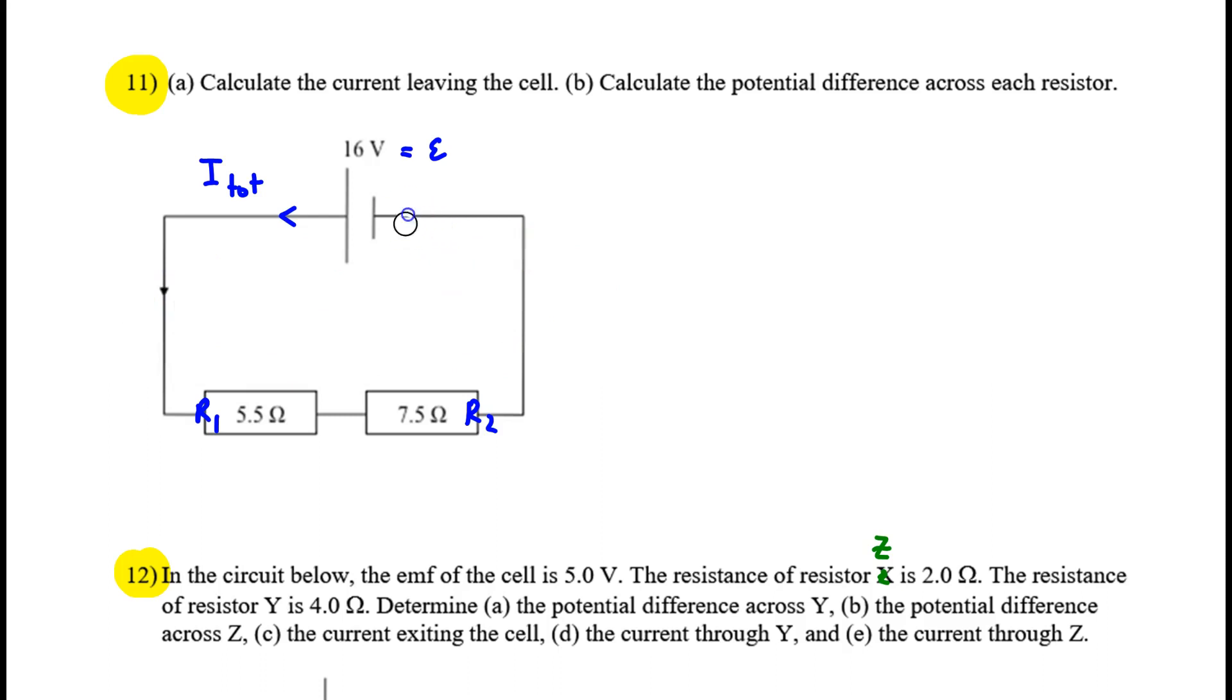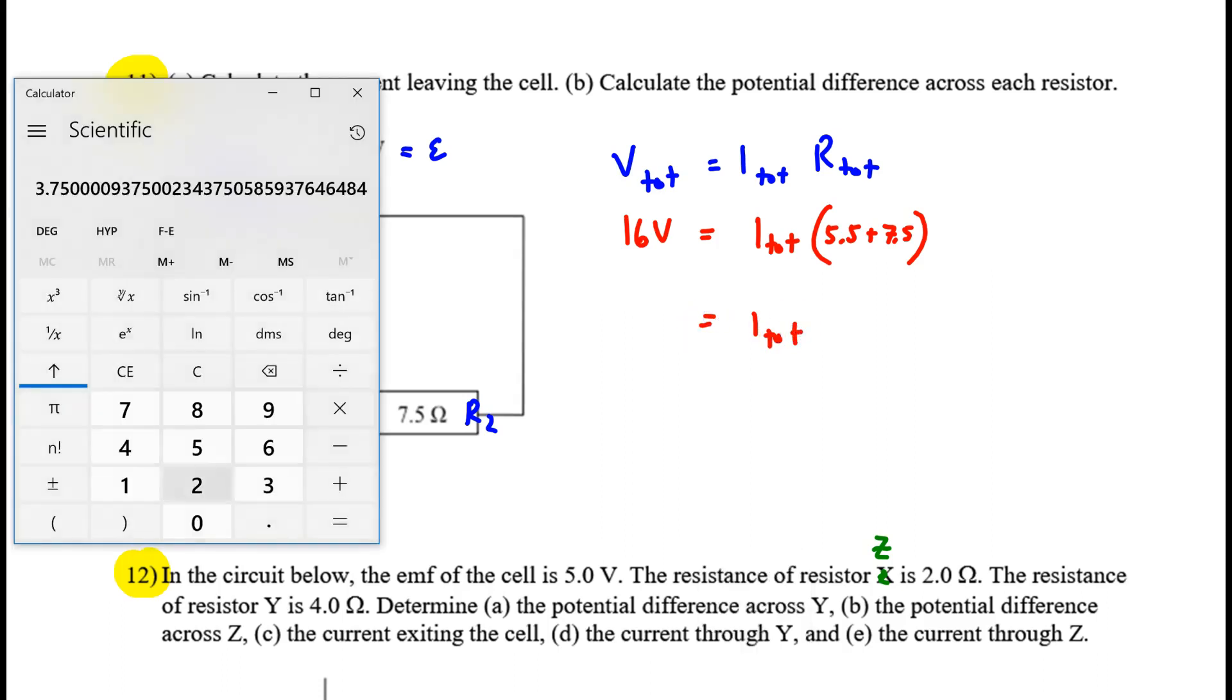We have to find that total current. We'll use the equation V equals IR applied to the entire circuit. We know the total potential difference, because it's exactly equal to the EMF. We're looking for the current. And the total resistance is found by adding those series resistances. When we divide, 5.5 and 7.5 makes 13, we get 1.23.